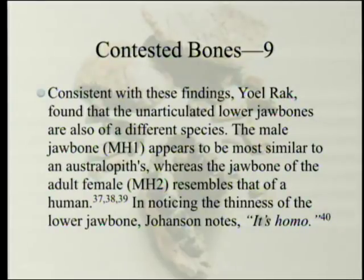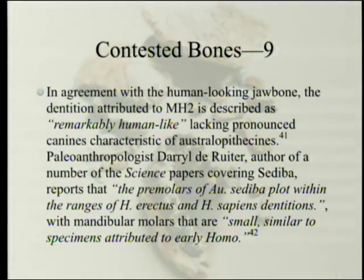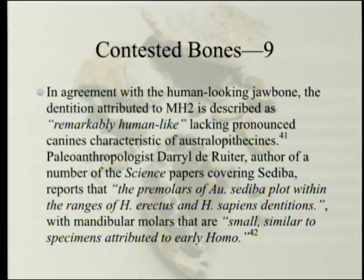So the female has the jawbone of a human and the back of an ape, and the male has the jawbone of an ape and the back of a human — that's what you call really mosaic evolution. In noticing the thinness of the lower jawbone, Johansson notes 'it's Homo.' Johansson is biased because he doesn't want anyone to dethrone Lucy, but the dentition attributed to MH2 is described as remarkably human-like, lacking pronounced canines characteristic of Australopithecines. Paleoanthropologist Daryl de Ruiter reports that the premolars of Australopithecus sediba plot within the range of Homo erectus and Homo sapiens dentitions, with mandibular molars that are small, similar to specimens attributed to early Homo.